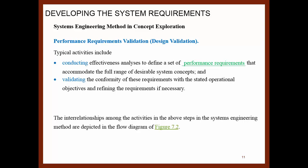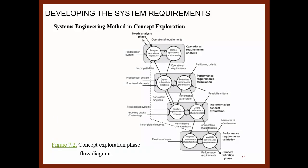The interrelationships among the activities in the systems engineering method are depicted in a summary diagram. These are the steps of the systems engineering method: operational requirements, performance requirements, implementation, concept exploration, and performance requirement validation. These are the activities happening within the concept exploration when we apply the systems engineering method.